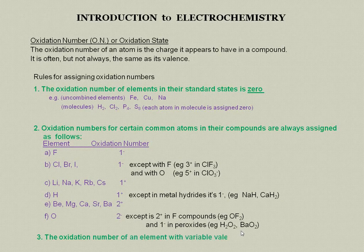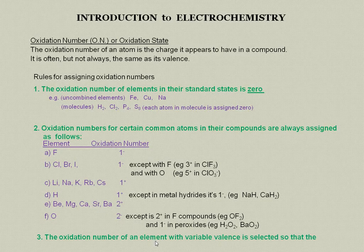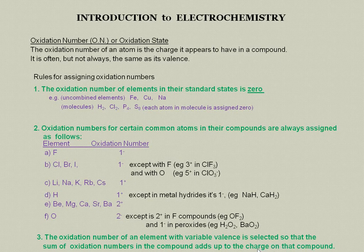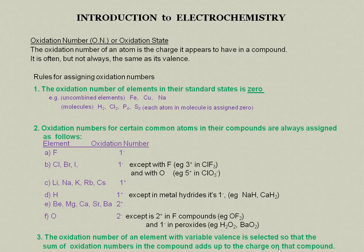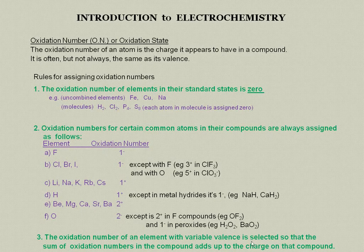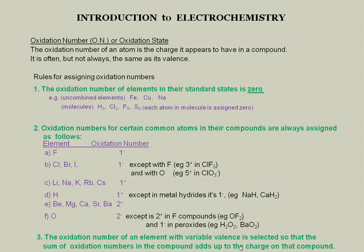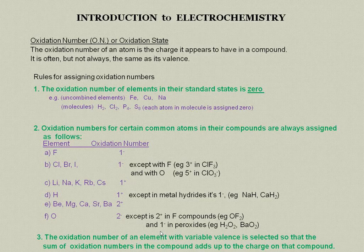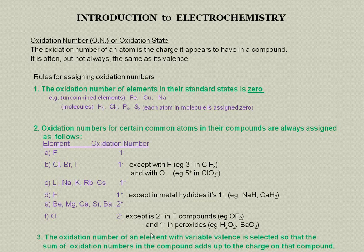The third and final rule to remember is that the oxidation number of an element with variable valence is selected so that the sum of the oxidation numbers in the compound adds up to the charge on that compound. The charge may be zero if it's neutral or it may have a charge on it. You should have a good handle on assigning these oxidation numbers. They'll be very important in your ability to balance redox reactions and to write half reactions when we come to electrochemical calculations.